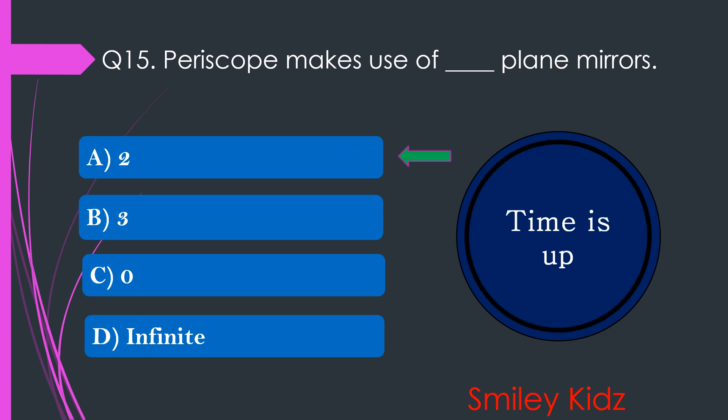Your time is up and the right answer is option A. 2. Periscope makes use of two plane mirrors.